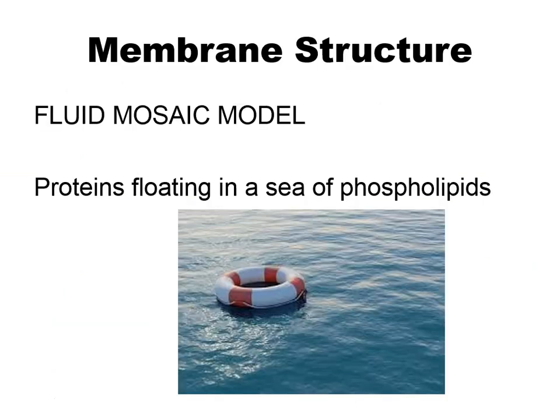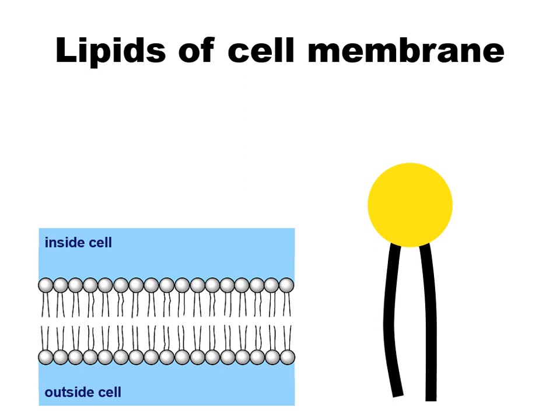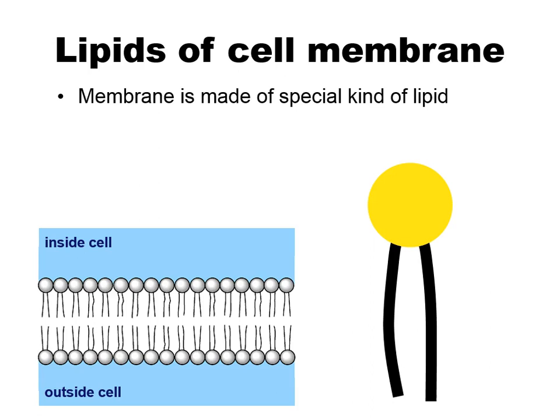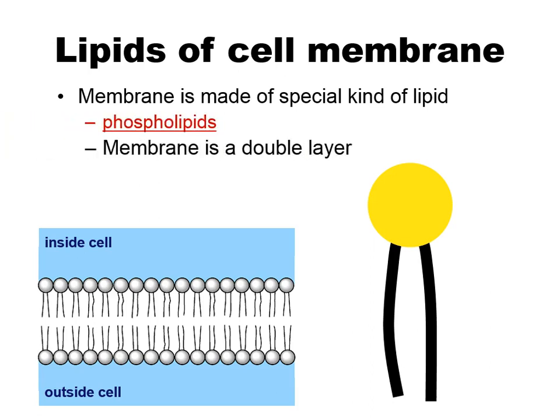When we talk about the structure of the cell membrane, we use something called the fluid mosaic model, which is basically a bunch of proteins floating in a sea of phospholipids. Phospholipids are these really cool structures that are made up of a phosphate head and a lipid tail, and they're going to form a double layer — we call it a bilayer.